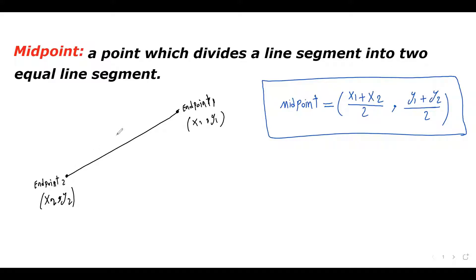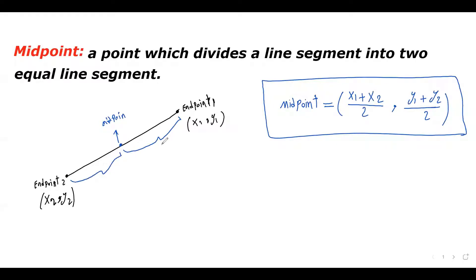Let's say I have this line and I have the coordinates of the endpoints — endpoint one and endpoint two, with their x-coordinates. The midpoint is the point which divides this line into exactly two equal lines. Here is my midpoint, so this divides this line into two equal segments — this part and this part should be exactly the same. So we are trying to find the coordinate of this point.